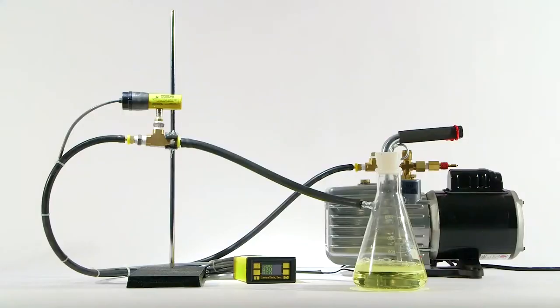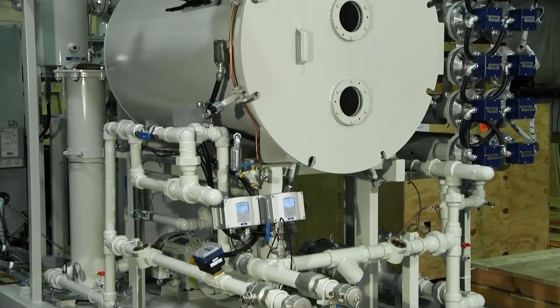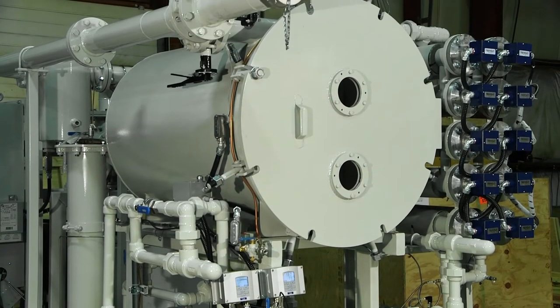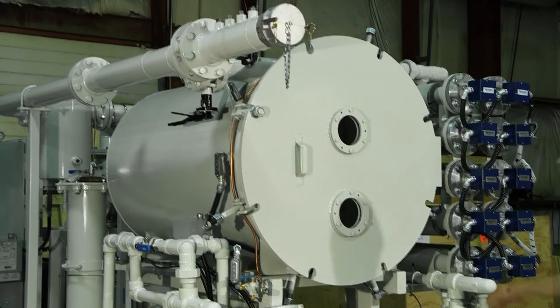The demonstration we just watched showed the basic principle of vacuum dehydration. However, actual equipment contains components that make vacuum dehydration more efficient. For example, this is a vacuum chamber in a typical vacuum dehydrator unit.